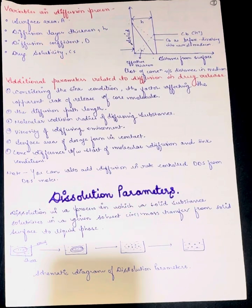Additional parameters related to diffusion in drug release: considering the sink condition, factors affecting the apparent rate release of the core molecule. Second, we have the diffusion path length. Third, we have the molecular collision radius of diffusion substance.